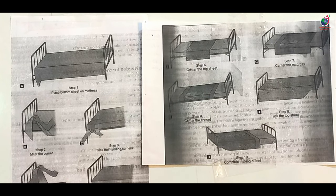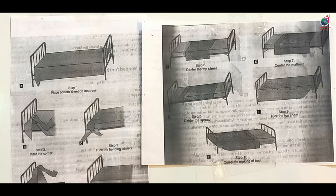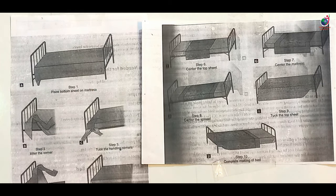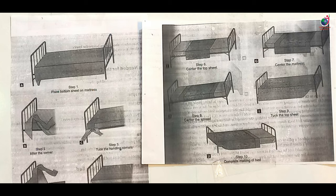Next, we see the procedure to complete bed making. First, place the bottom sheet on the mattress to cover it. Second, make a mitered corner. Third, adjust the mackintosh on top. Fourth, place the hands on the side of the mattress and fix the corner.